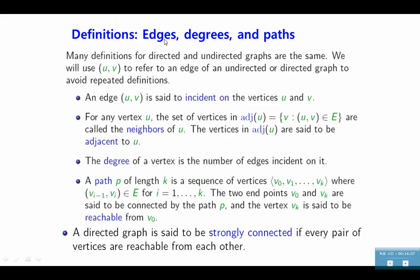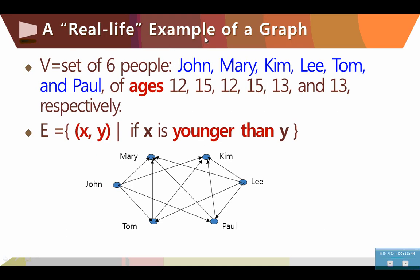Okay. We defined some edges and degrees. Strongly connected, we defined it. And I think we covered this. So, here is the example of graphs. Let your set of six people, like John, Mary, Kim, Lee, Tom, Paul. And age is 12, 15, 12, 15, 13, and 13 in middle schools. Let E be edges with this relationship. If X is younger than Y, then we have an edge from X to Y. Then, we can draw a graph like this. If this is younger than this, Lee is younger than Kim, like this. From this data. So, we can draw the graph from the social relations. From here.